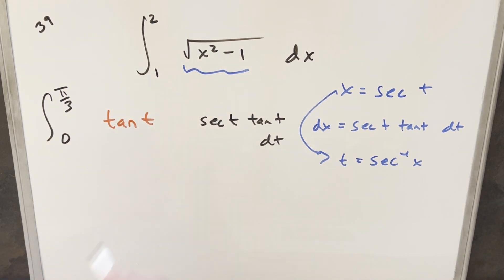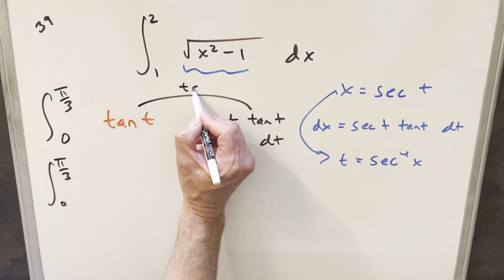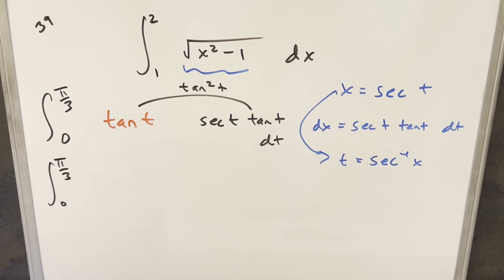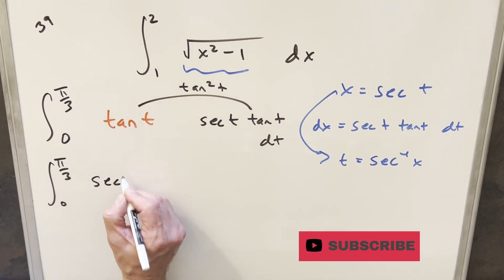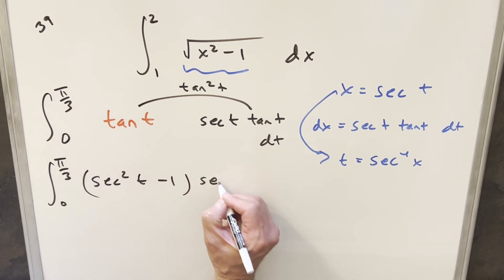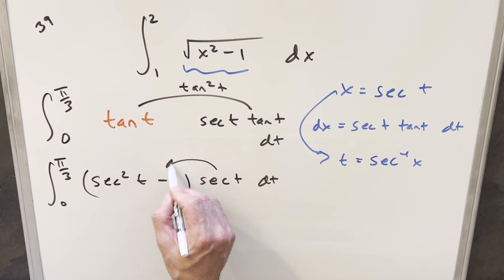But now let's go ahead and rewrite this thing. So we have, we'll bring down our bounds. Now this is going to give me, we multiply this out, this is going to give me tan squared t. But what I can do is use the same identity we used in reverse and write this as secant squared t minus 1. And we have it times this secant of t dt. But distributing in this secant, what we can do is write this as two integrals. The first one is going to be secant cubed of t.